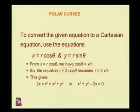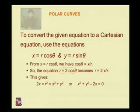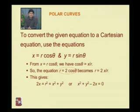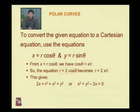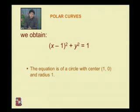To convert to Cartesian form, use x = r·cosθ and y = r·sinθ. From these, cosθ = x/r, so r = 2cosθ becomes r = 2x/r, giving r² = 2x. Since r² = x² + y², we get x² + y² = 2x, or x² + y² − 2x = 0. Completing the square: (x−1)² + y² = 1, which is a circle with center (1, 0) and radius 1.